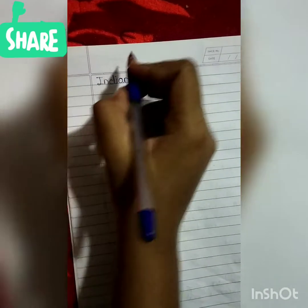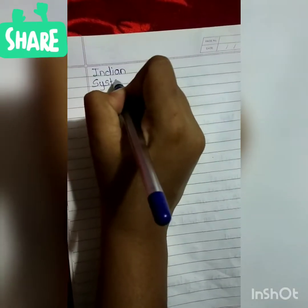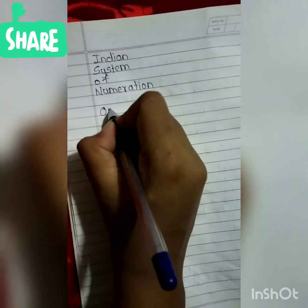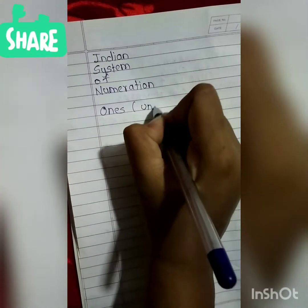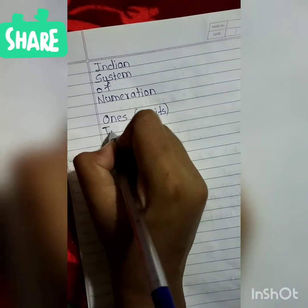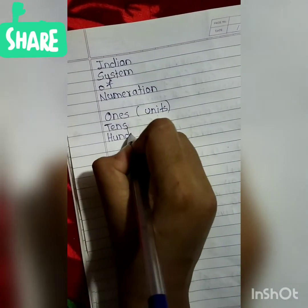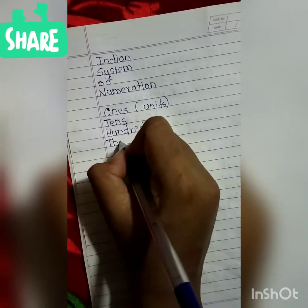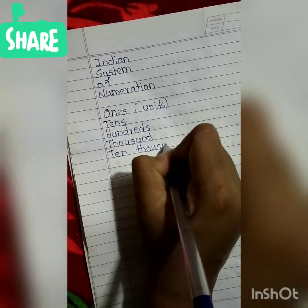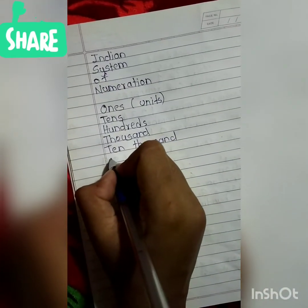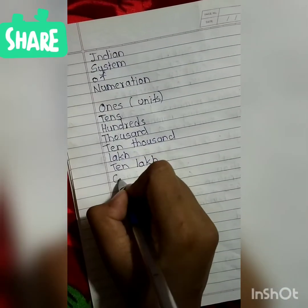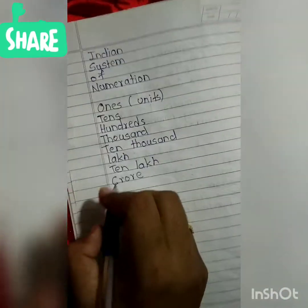In the Indian system of numeration, we start from ones — most of the time we say units. So: ones, tens, hundreds, thousands, ten thousands, lakhs, ten lakhs, crores, ten crores.